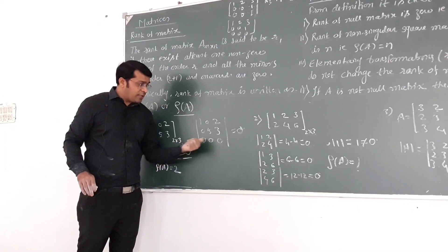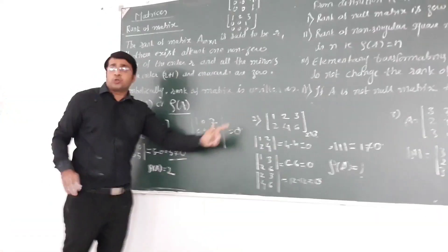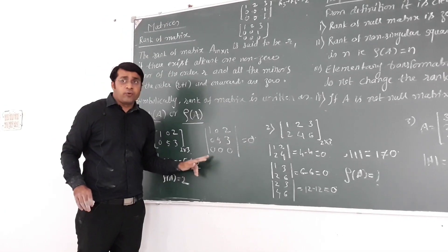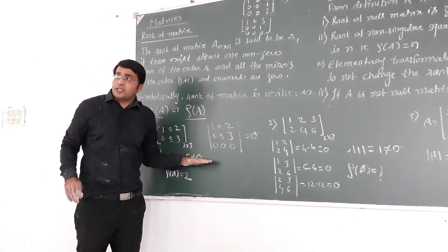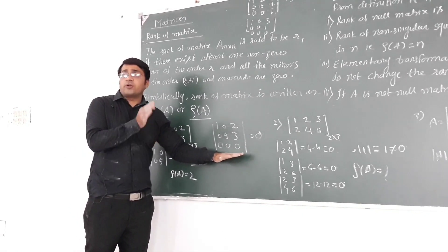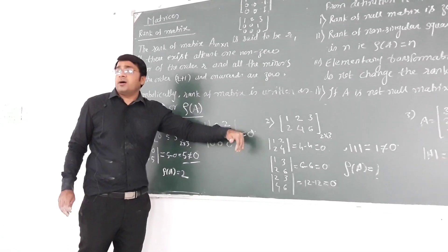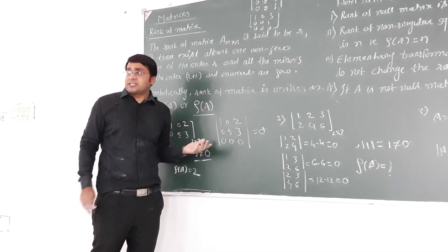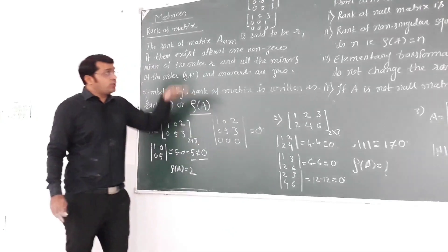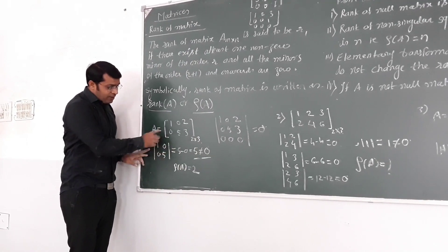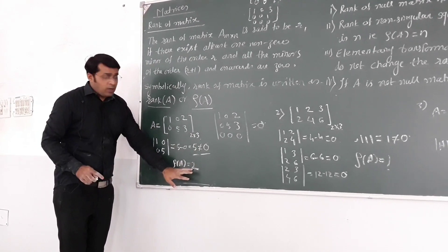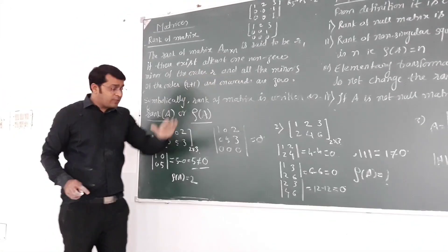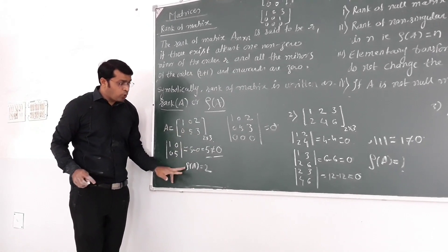Because by the property of the determinant, if any column or any row is 0, the value of the determinant is always 0. If I find the minor of order 4 by 4, I add the 0 row and 0 column, and that new minor again has value 0. So all higher order minors here are coming to be 0. It is satisfying the definition — we have a minor of order 2 which is not 0, and all higher order minors are 0. Therefore, the rank of this matrix is 2.